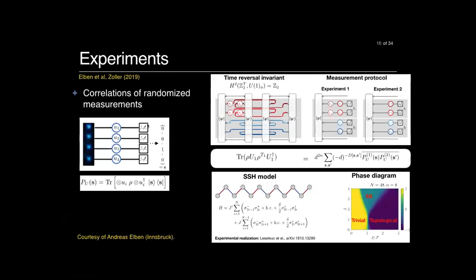This quantity can be measured at least for qubit systems. There is a beautiful work done by Zoller's group, particularly Andras Elben, where they showed one can write the trace of ρ·ρ^(T_A) in terms of the probability of measuring a state after a random unitary, accumulating all these probabilities. But let me get back to what I wanted to tell you.